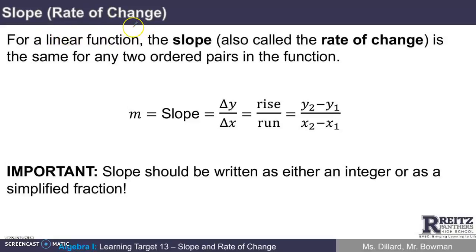Today we want to find slope from a graph, but it's the same definition. For a linear function, the slope, also called the rate of change, is the same for any two ordered pairs in the function. The slope we often give the letter name M. Why is it M as the slope? Nobody really knows the exact answer, is my best understanding. It's just what is standardly used in the United States to refer to slope.